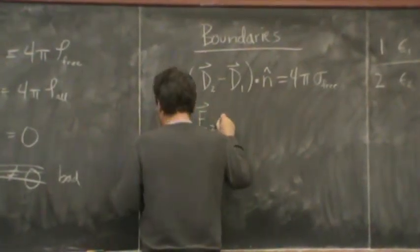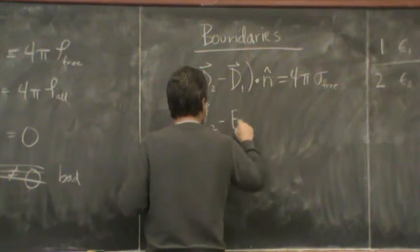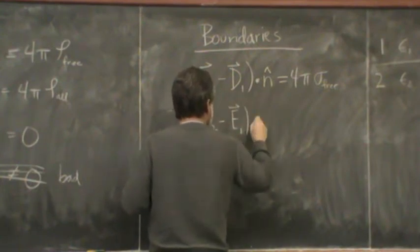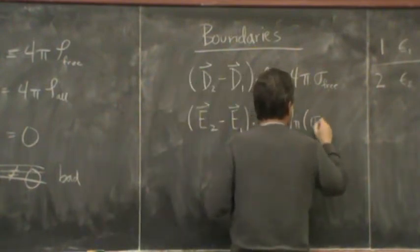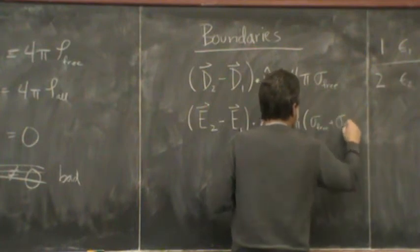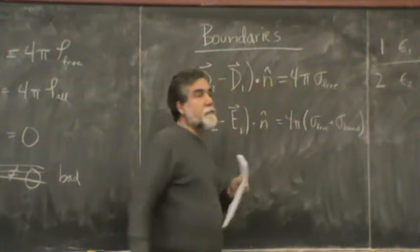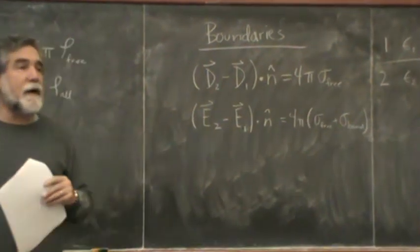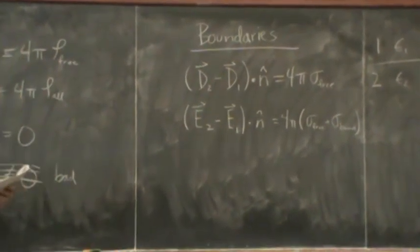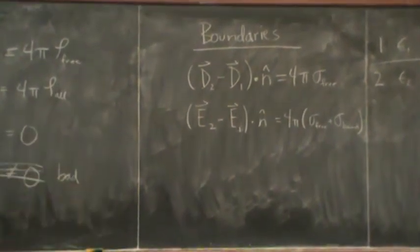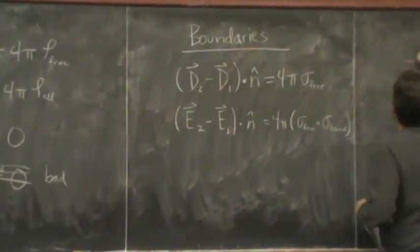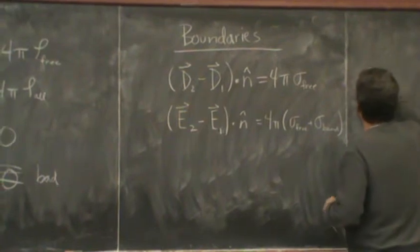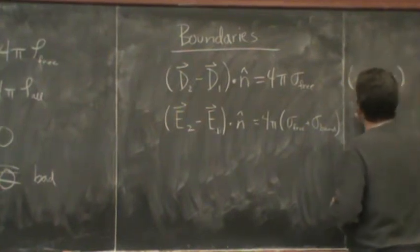The E field might sometimes come in handy. The E field is 4 pi times the free charge plus the bound charge. And sometimes we might not know the bound charge right off the bat. We have to work that out after we've got the polarization of the material. So that can get a little bit messy. That was my interface. Here's my number. Simple.